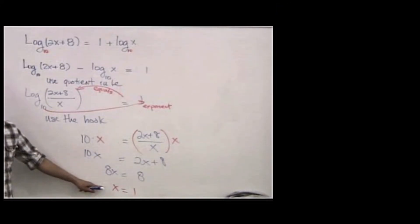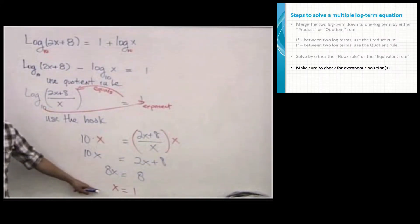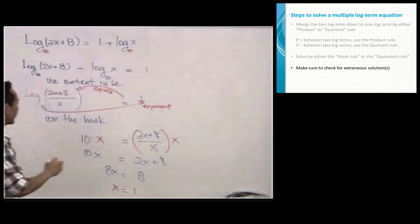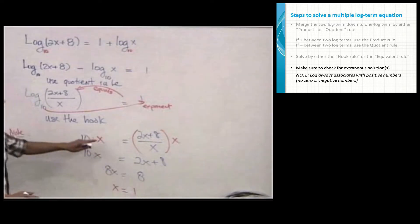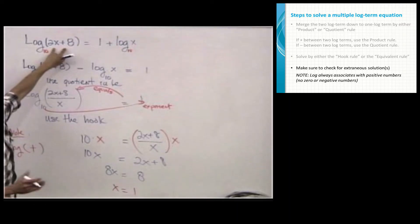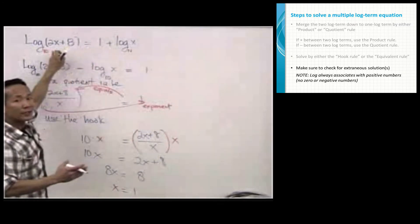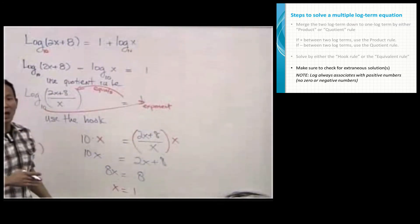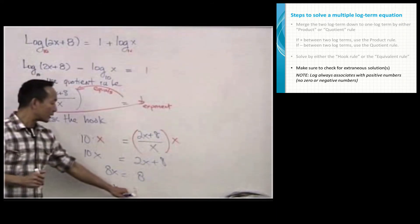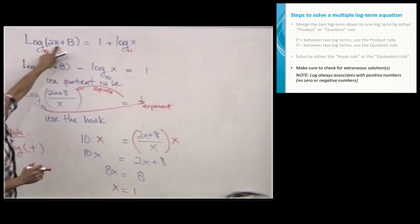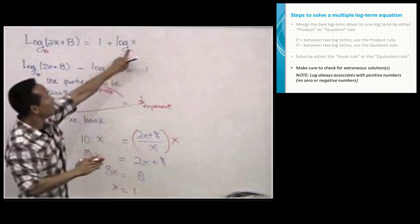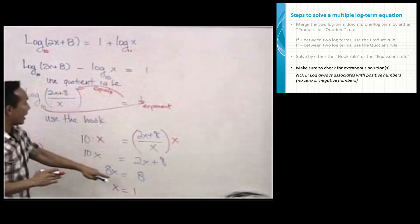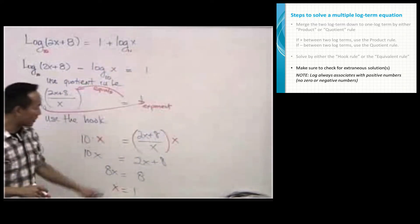After getting a solution, you must check whether it is valid or extraneous. Log is very sensitive — log always requires positive arguments; no negatives, no zero. Whatever you solve for, plug it back into every quantity inside a log. With x equals 1: for (2x + 8), that gives 2(1) + 8 = 10, which is positive — passes the test. For log x, substituting 1 gives 1, which is positive — also passes. Therefore, x equals 1 is a good solution.